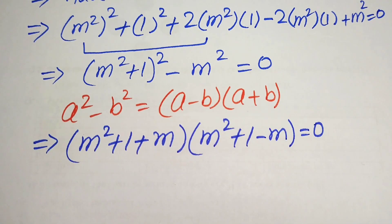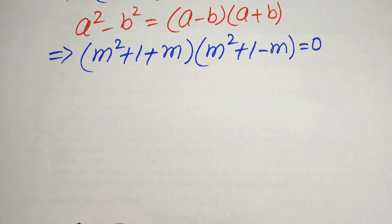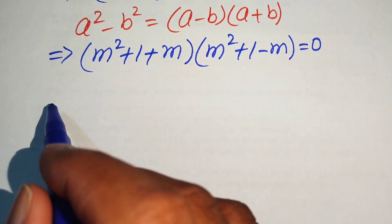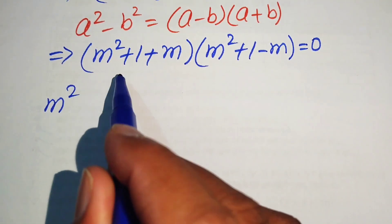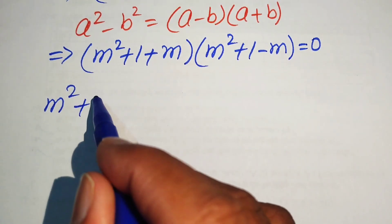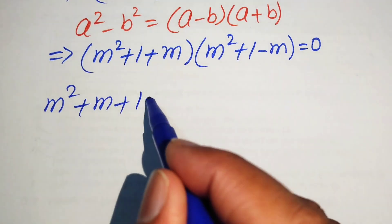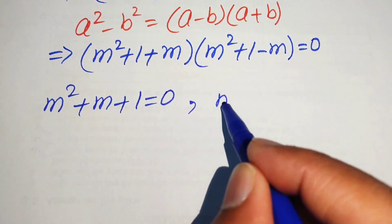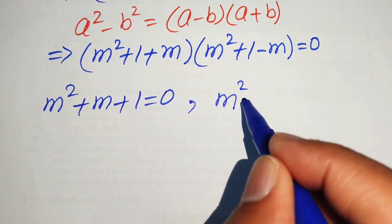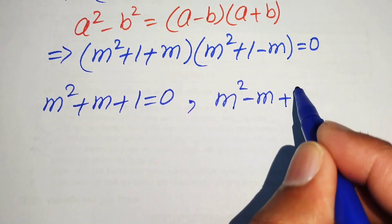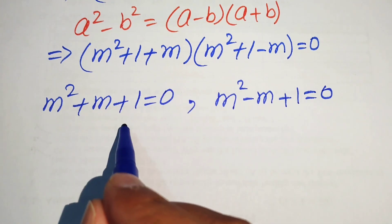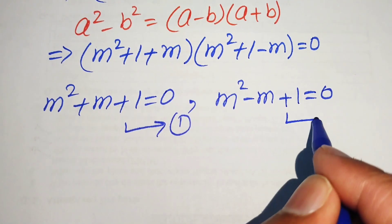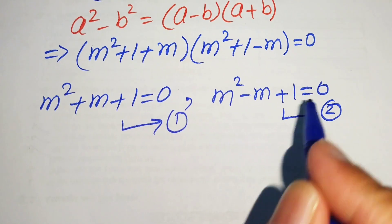To find all four roots, we split this into two cases. Case 1: m squared plus m plus 1 equals 0 (equation 1). Case 2: m squared minus m plus 1 equals 0 (equation 2). Both of these are quadratic equations which we can solve using the quadratic formula.